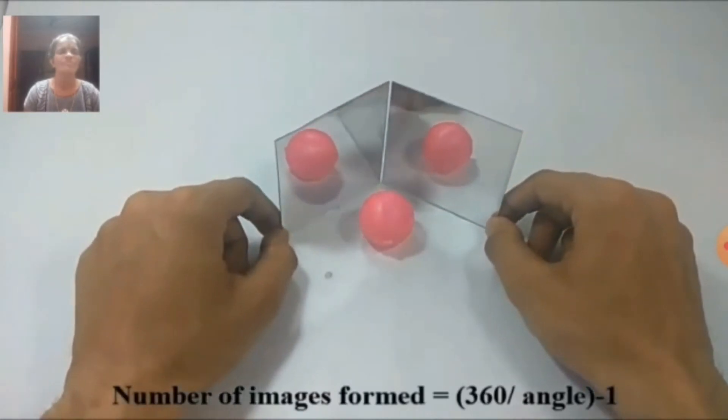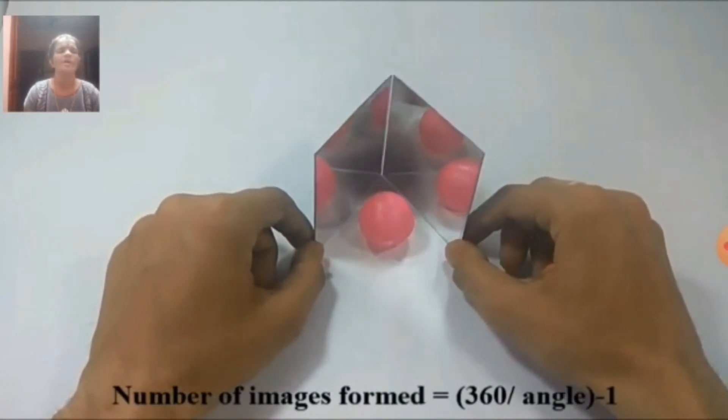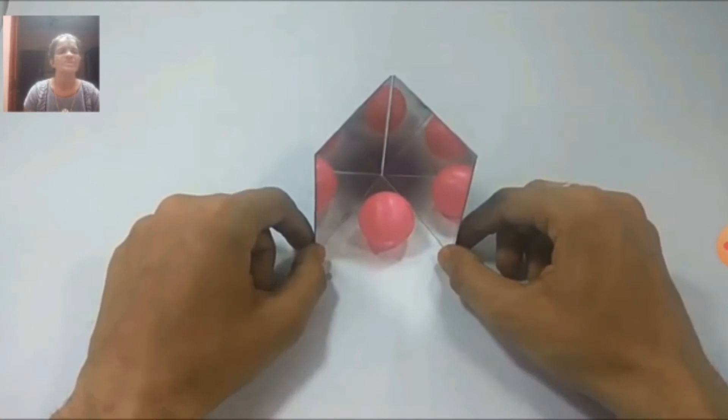Number of images formed will be 360 by angle minus 1. The number of images may vary depending upon the angles between the two mirrors.